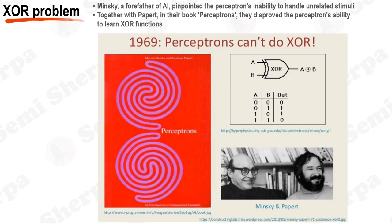Marvin Minsky, often hailed as one of the forefathers of AI, began to scrutinize the limitations of Rosenblatt's Perceptron. Minsky observed that while the machine was capable of distinguishing E's from F's or F's from 6's, its recognition abilities crumbled when faced with stimuli unrelated to these figures. Teaming up with Seymour Papert, Minsky co-authored a book titled 'Perceptrons,' which effectively halted the progress of Perceptrons and the budding concept of neural nets. They asserted that the Perceptron was not only incapable of learning the simple exclusive-or (XOR) function, but also theoretically could never learn it, regardless of the training duration.